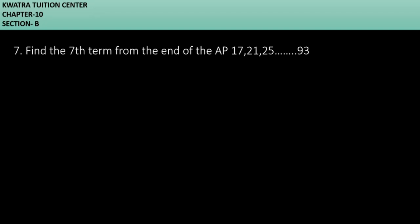It says find the seventh term from the end of the AP 17, 21, 25 up to 93. You have to take the seventh term but from the end. So what do you do? First we have to take it from the end, so 93, then 25, 21, and then 17.